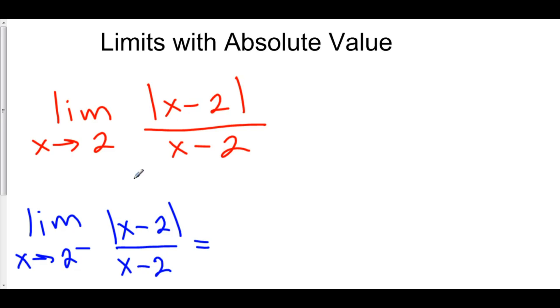Well, here we have the absolute value of 1.9 minus 2. Well, 1.9 minus 2, that would be negative .1. The absolute value of that is positive .1. On the bottom, we have 1.9 minus 2 is negative .1. So, positive .1 over negative .1 is just negative 1.